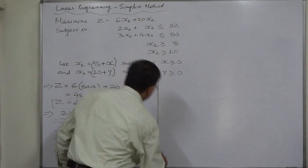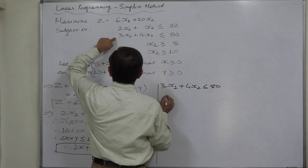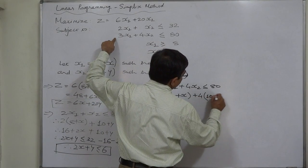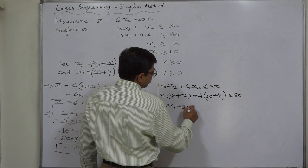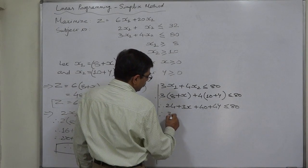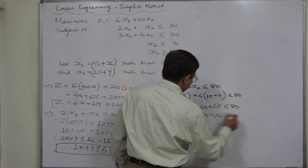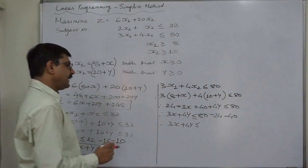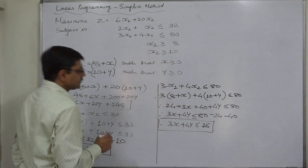Similarly, for the second constraint, 3x₁ + 4x₂ ≤ 80 becomes 3(8 + x) + 4(10 + y) ≤ 80. Expanding: 24 + 3x + 40 + 4y ≤ 80, so 3x + 4y ≤ 80 − 24 − 40. Ultimately the second constraint becomes 3x + 4y ≤ 16.